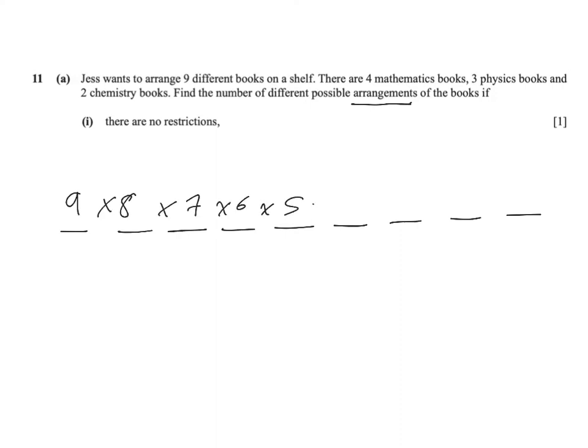...six different books could be here, five books, etc., which means there are nine factorial ways of different possible arrangements if there are no restrictions, which is 362880.